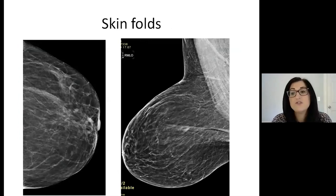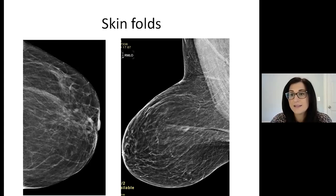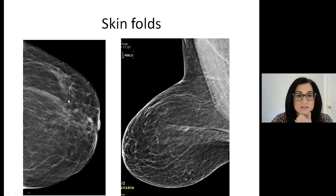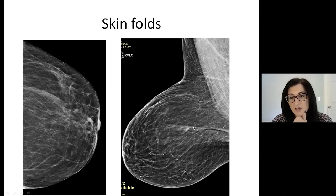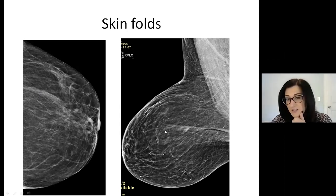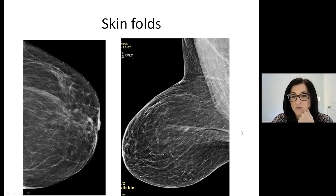Skin folds — you don't want skin folds. Skin folds can do the same thing a closed IMF can do: they can hide lesions, whether calcifications or masses. Here is a skin fold laterally on a CC — you can see the overlapping skin with air in it, very classic of a skin fold. We also have air and overlapping skin in the MLO. So these would need repeats to ensure that there's nothing there.